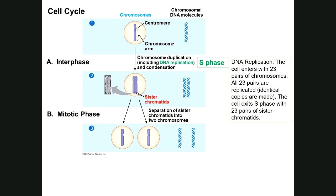Now we're going to focus on this first type of cell division — the cell cycle plus the mitotic phase. When the cell enters S phase, DNA replication occurs. The cell enters S phase with 23 pairs of chromosomes, all of which are replicated — identical copies are made. The cell will then exit S phase no longer with 23 pairs of chromosomes, but now with 23 pairs of sister chromatids.